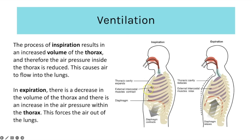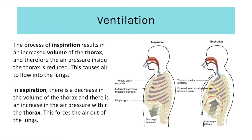When you inhale, the diaphragm contracts, causing it to move down and become flatter. The external intercostal muscles contract and the internal ones relax, pulling the rib cage up and out, providing a larger volume. When you exhale it's the exact opposite — the diaphragm relaxes and domes upwards, the external intercostal muscles relax and the internal intercostal muscles contract, pulling the rib cage inwards and down, reducing the volume of the thorax.